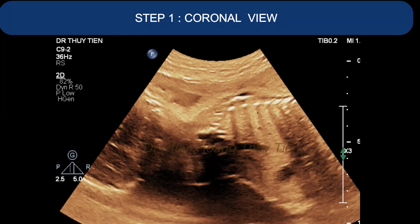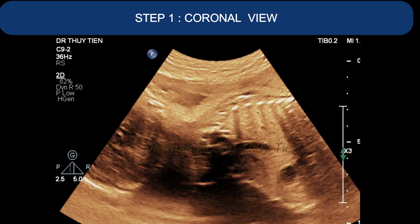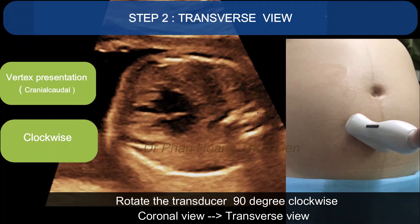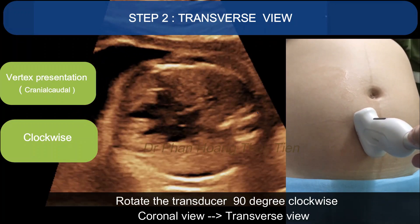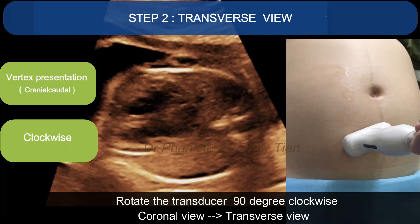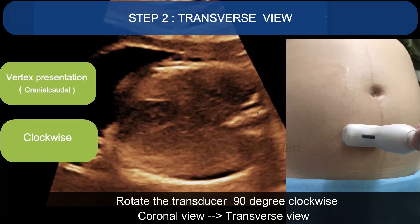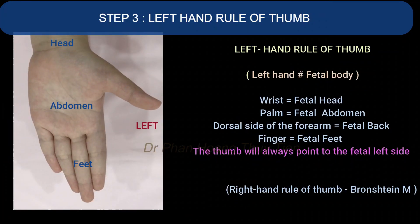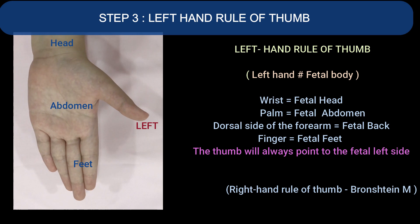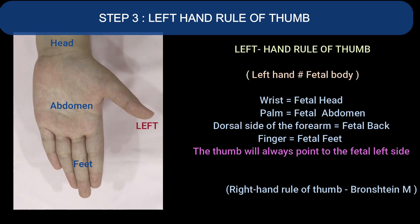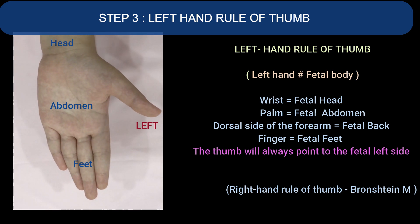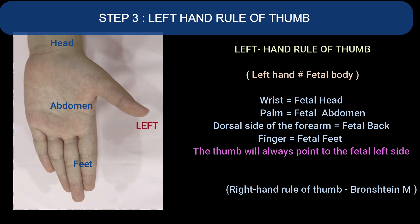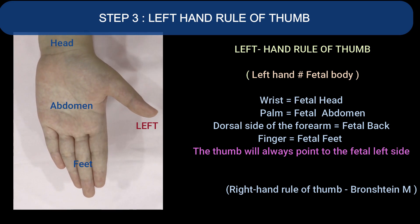Step 2 — transverse view: this is a vertex presentation, so you will rotate the transducer 90 degrees clockwise. Step 3 — left-hand rules of thumb, adapted from Mr. Bronston: the wrist will be the fetal head.